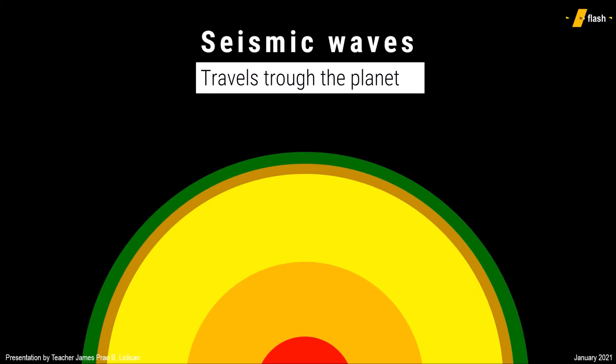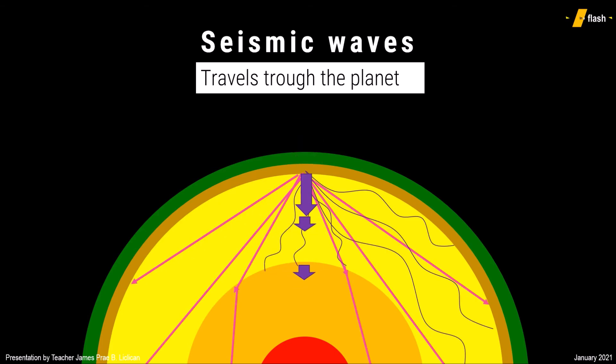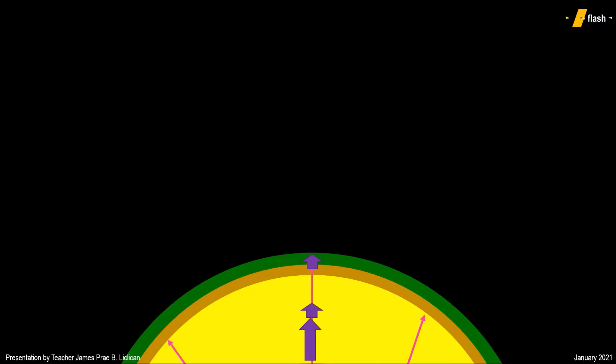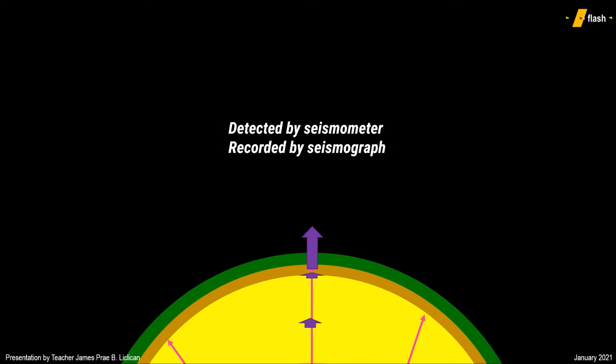Edmund Halley once theorized that the planet is hollow and that the crust just drifts above an enormous ball of gas underneath. But because of seismological data, we confirmed that the planet is made up of many things. Remember that seismic waves come in two forms, and under body waves, P waves and S waves travel at different speeds and through different phases of matter.